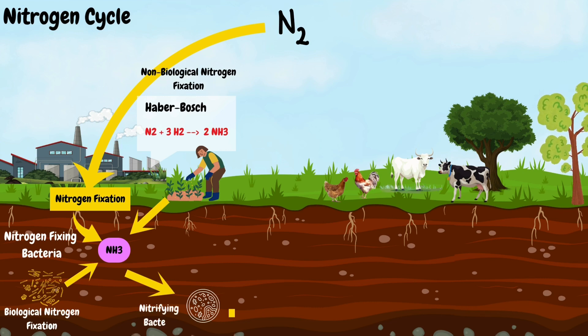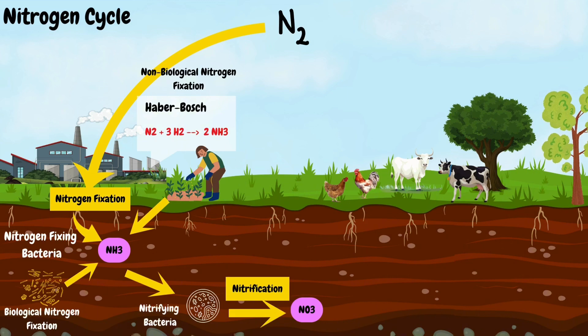Next, nitrifying bacteria convert ammonia and ammonium ions into nitrite and then to nitrate ions under aerobic conditions through a process called nitrification.